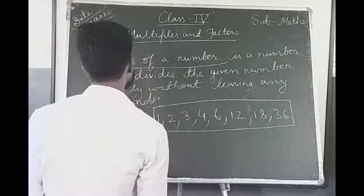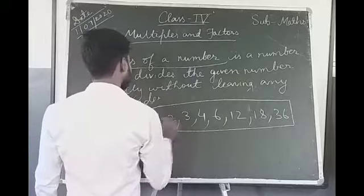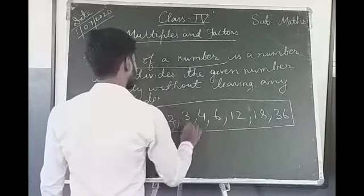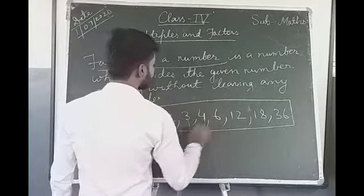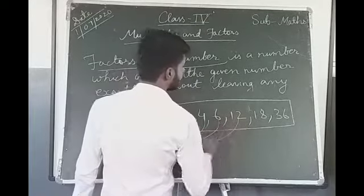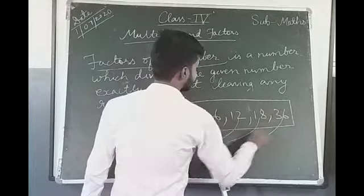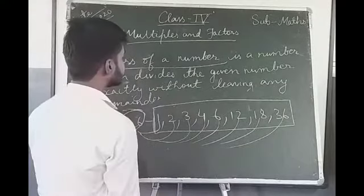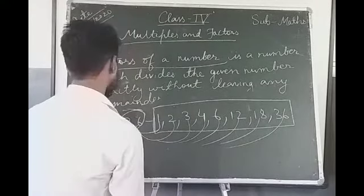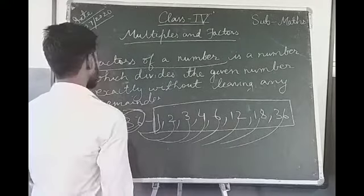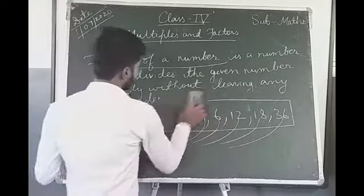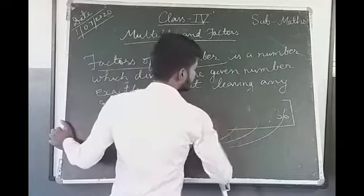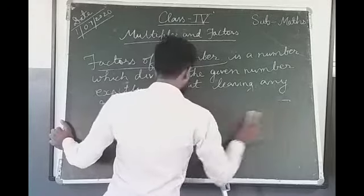Dividing 36, we get: 1, 2, 3, 4, 6, 12, 18 and 36 are the factors of 36. In this way we can find the factors of a given number.